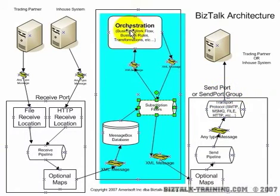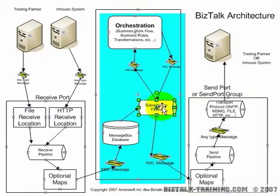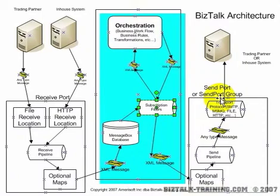Send port groups are simply a group of send ports, almost like an Outlook distribution list. So when you send an email to the developer group, that group could have five different emails one day and seven the next. It's the send port itself that actually has the filter or the subscription, and you simply add and remove send ports from that group just like an Outlook distribution list.